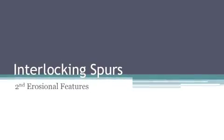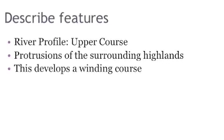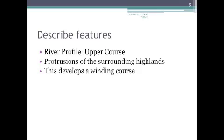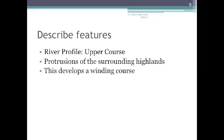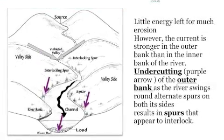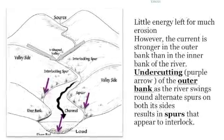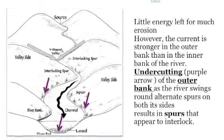Interlocking spurs — the second erosional feature. Description: River profile, upper course of the river. Protrusions of the surrounding highlands develop a winding course. Processes at work: there is little energy left for much erosion. However, the current is stronger in the outer bank than in the inner bank of the river.